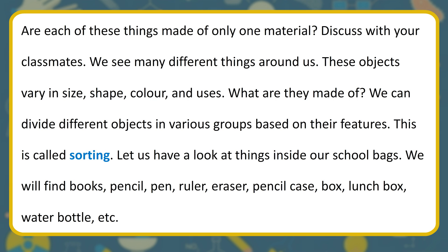Are each of these things made of only one material? Discuss with your classmates. We see many different things around us. These objects vary in size, shape, color, and uses. What are they made of? We can divide different objects into various groups based on their features. This is called sorting.